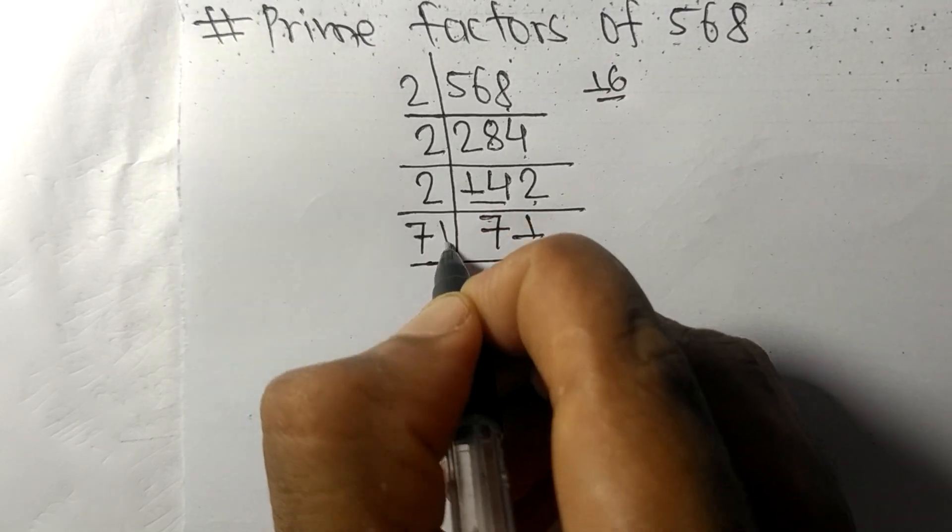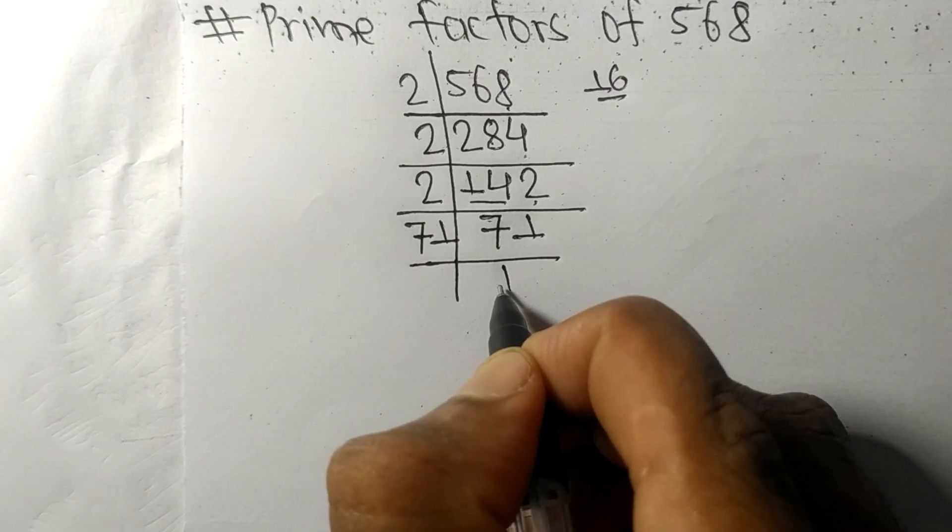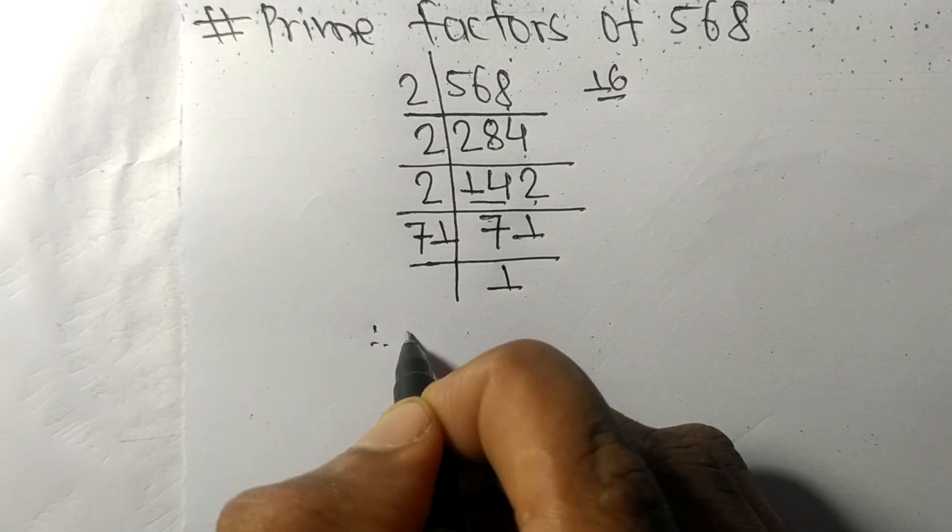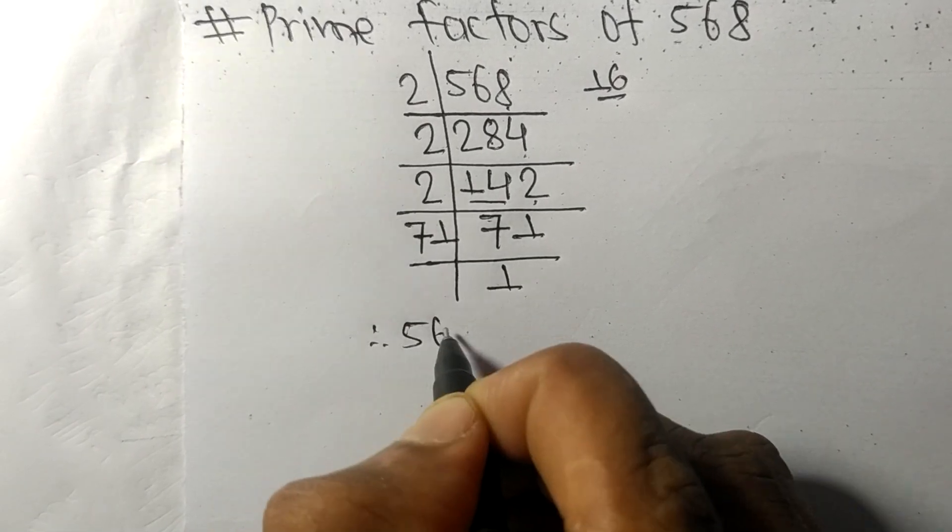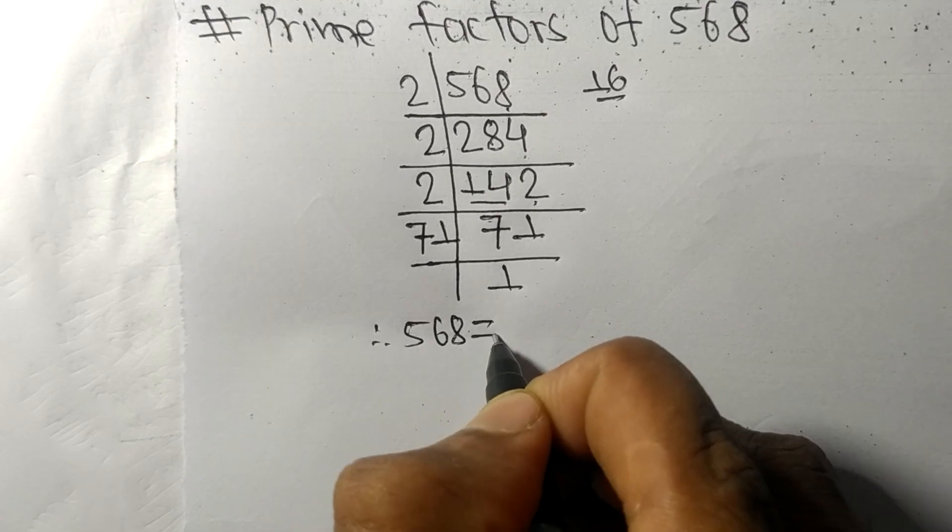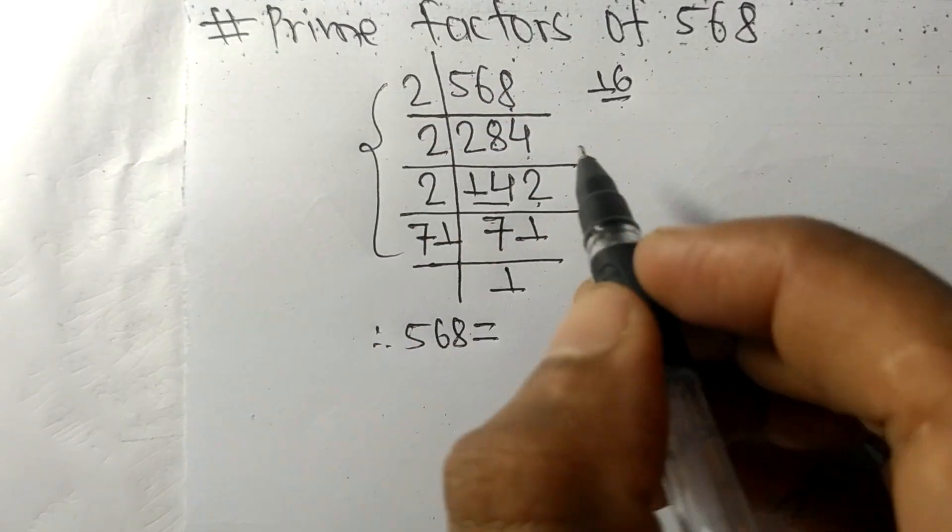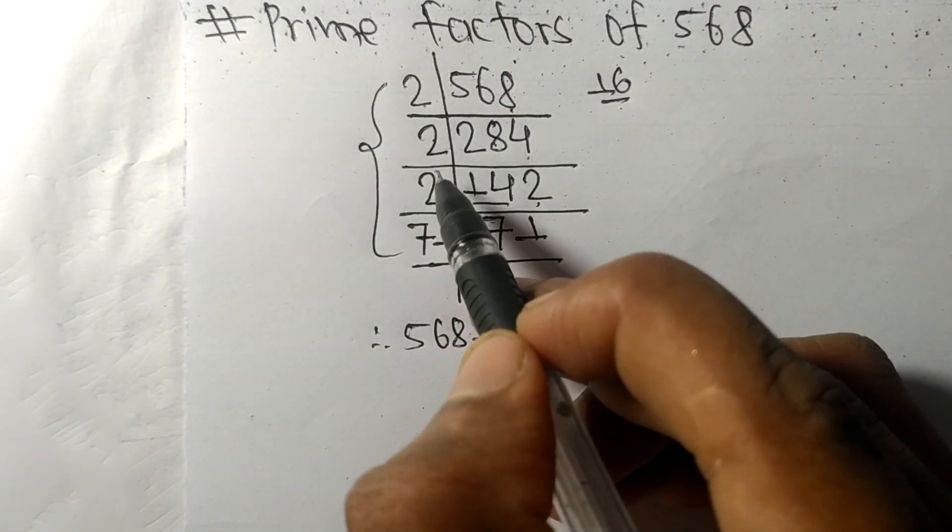We get 1. Therefore, 568 is equal to... from this side we have 1, 2, 3 times 2.